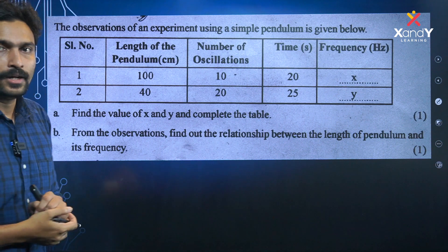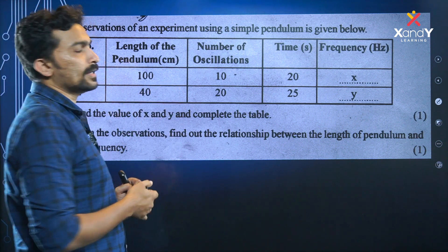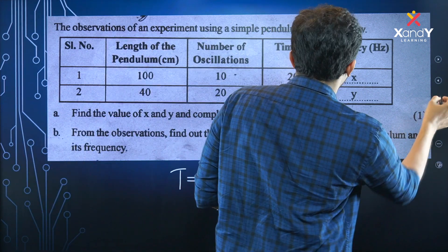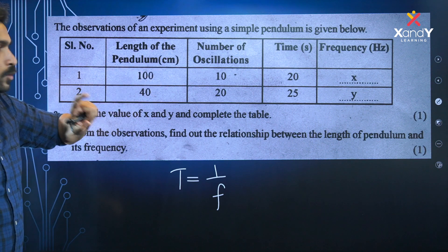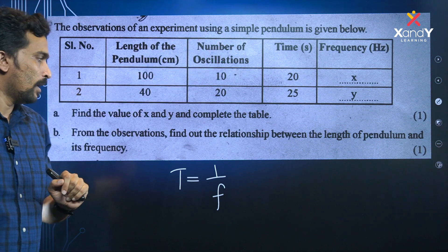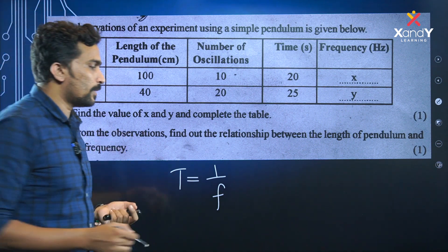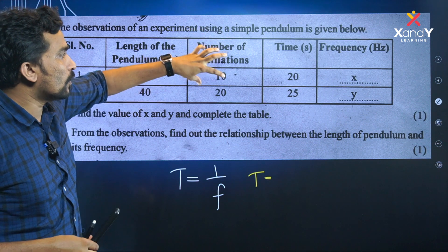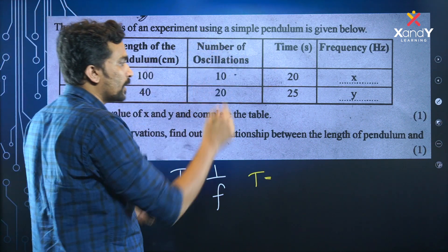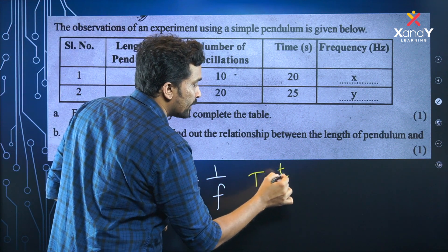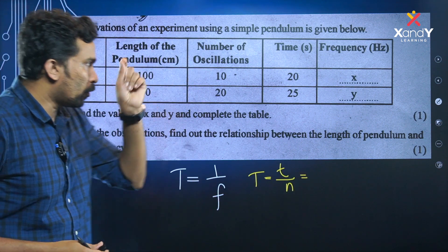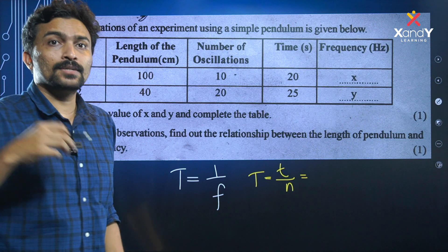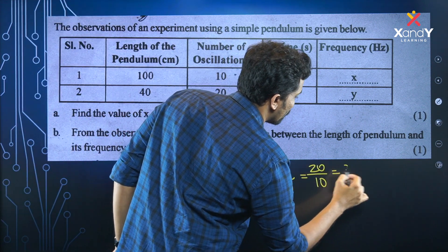Find the value of x and y and complete the table. Time period is equal to 1 divided by frequency, and also equal to total time taken divided by number of oscillations. For 20 oscillations completed in 40 seconds, time taken is 40 divided by 20, which equals 2 seconds.